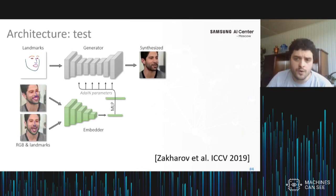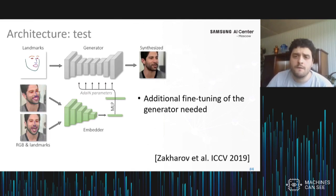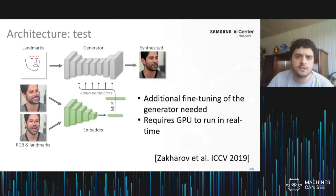It all worked, but there were issues. First, to overcome the identity gap, it was necessary to fine-tune the generator to the training photographs, and that still required up to minutes on a desktop GPU. Furthermore, to run the generator network at sufficient frame rate, even at 224 by 224 resolution, required a dedicated high-end GPU.